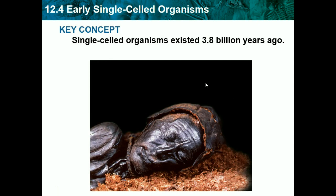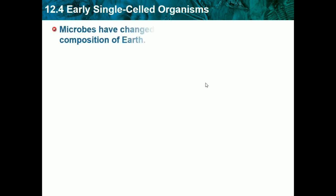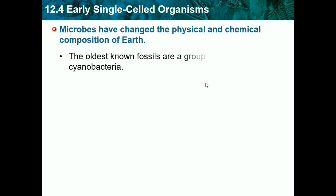Our key concept is that single-celled organisms existed 3.8 billion years ago. Single-celled organisms are basically the most basic form of a living organism. Microbes have changed the physical and chemical composition of Earth, and microbes are a type of single-celled organism. The oldest known fossils are groups of marine cyanobacteria, which are also single-celled organisms.